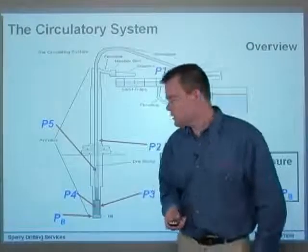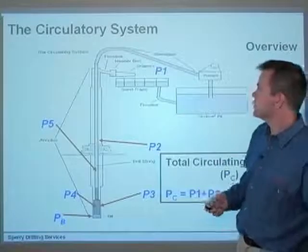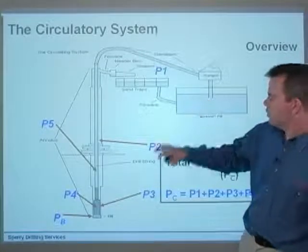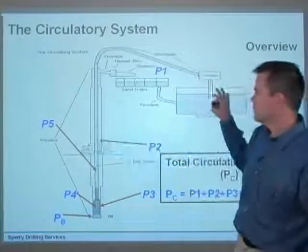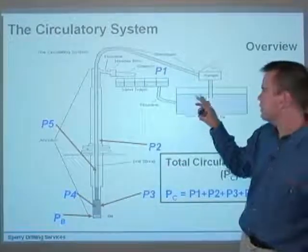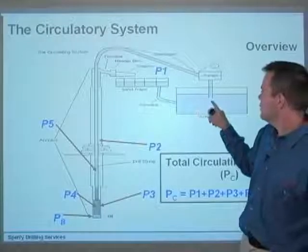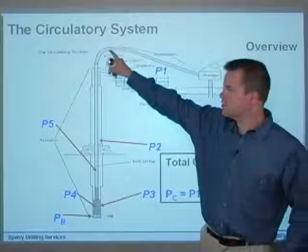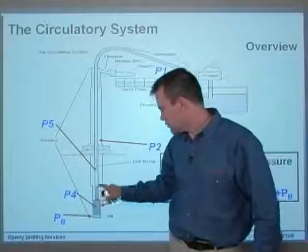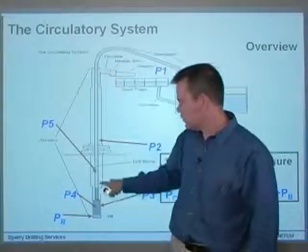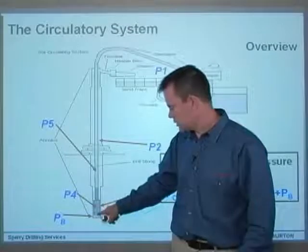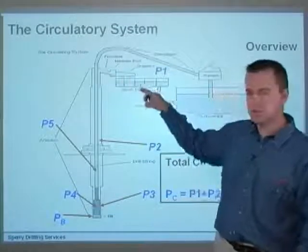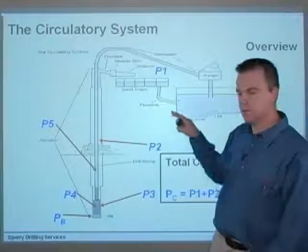Let's look at a schematic of the actual circulatory system. We've got a borehole over here, and this stuff is all on the rig. We've got an active pit full of mud, mud being sucked up through the pumps, being pumped through the standpipe, down the drill string, through the drill pipe, the heavyweight drill pipe, the BHA, out the bit, up the annulus, and back over the shakers into the surface sand traps and back to the pits again.